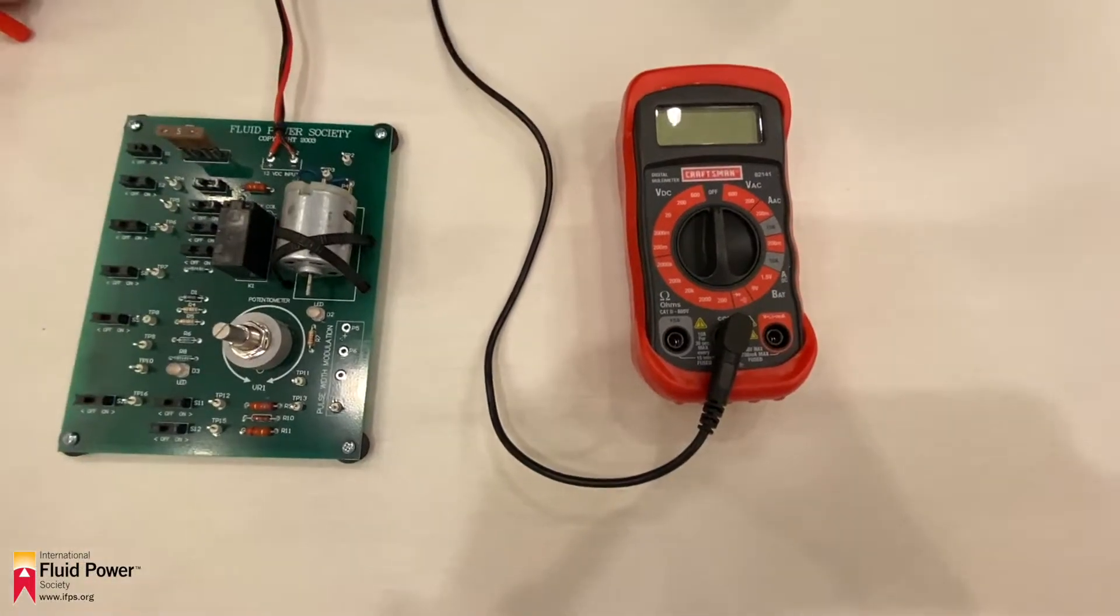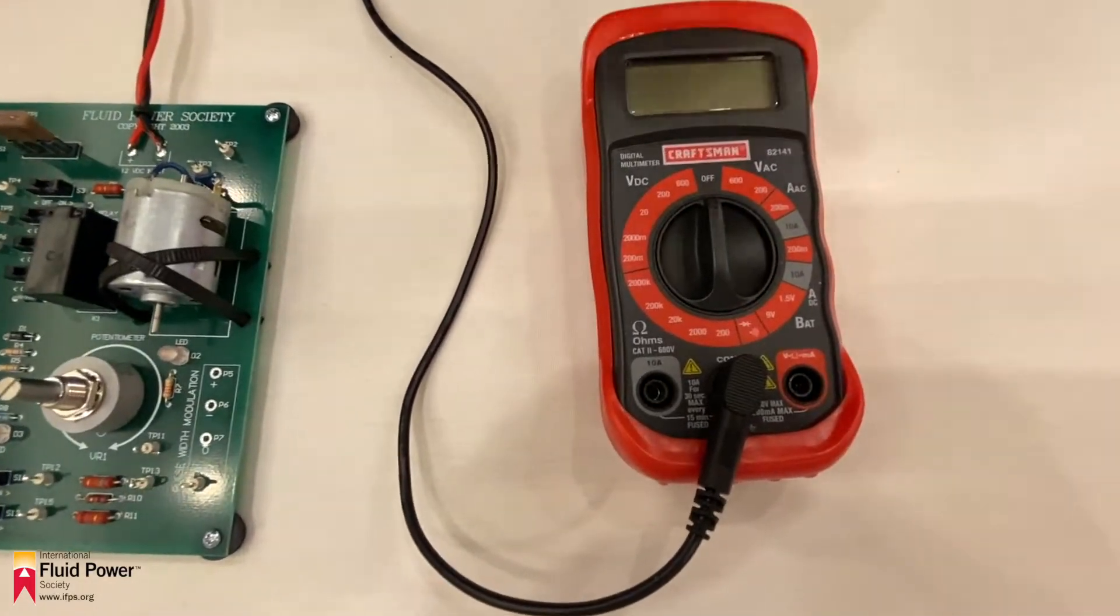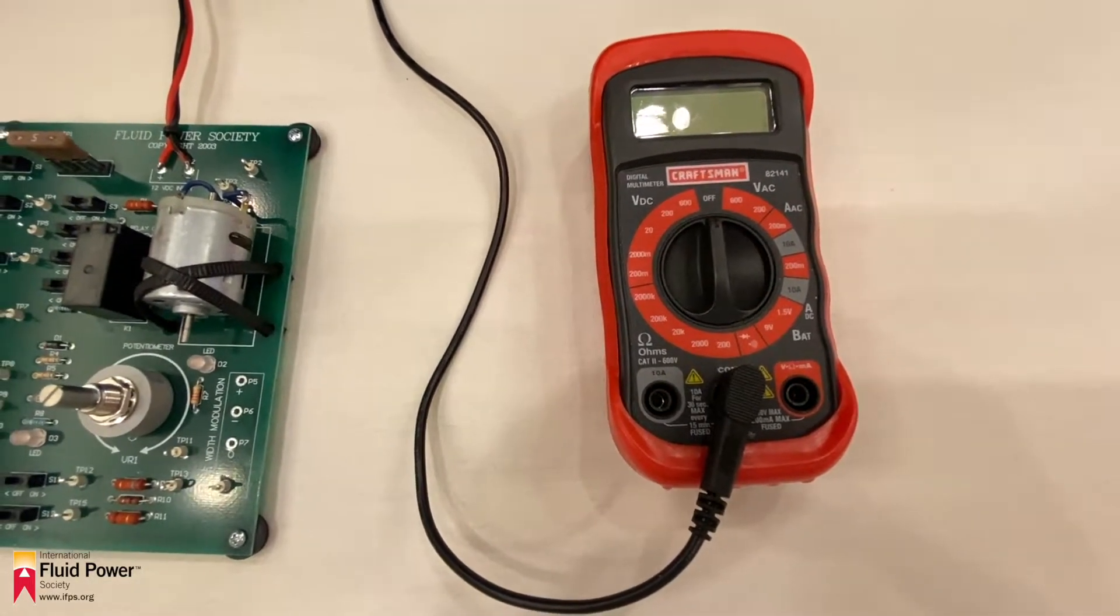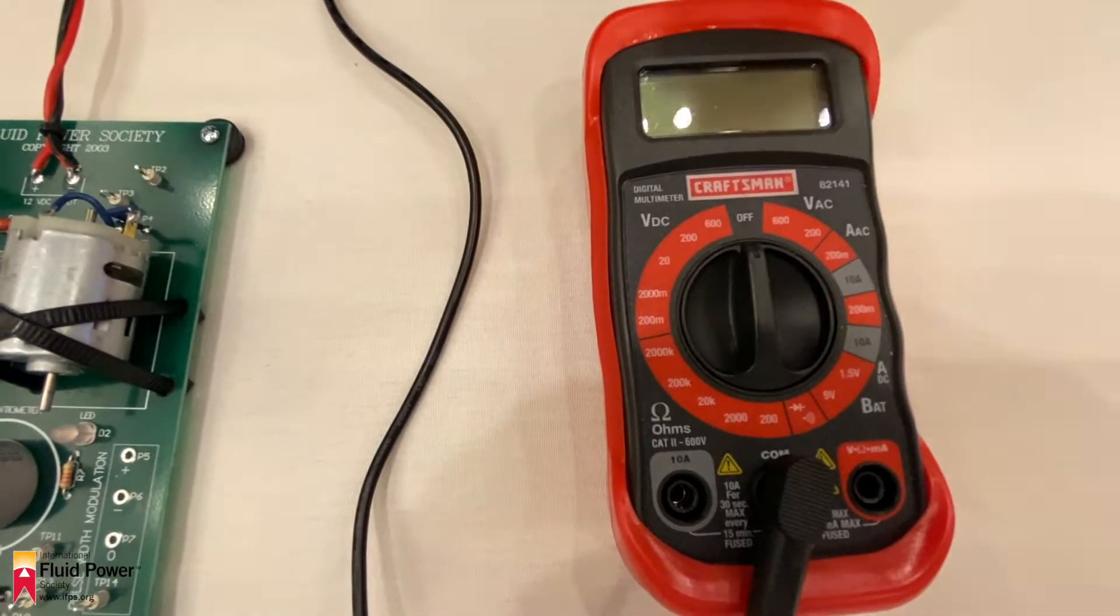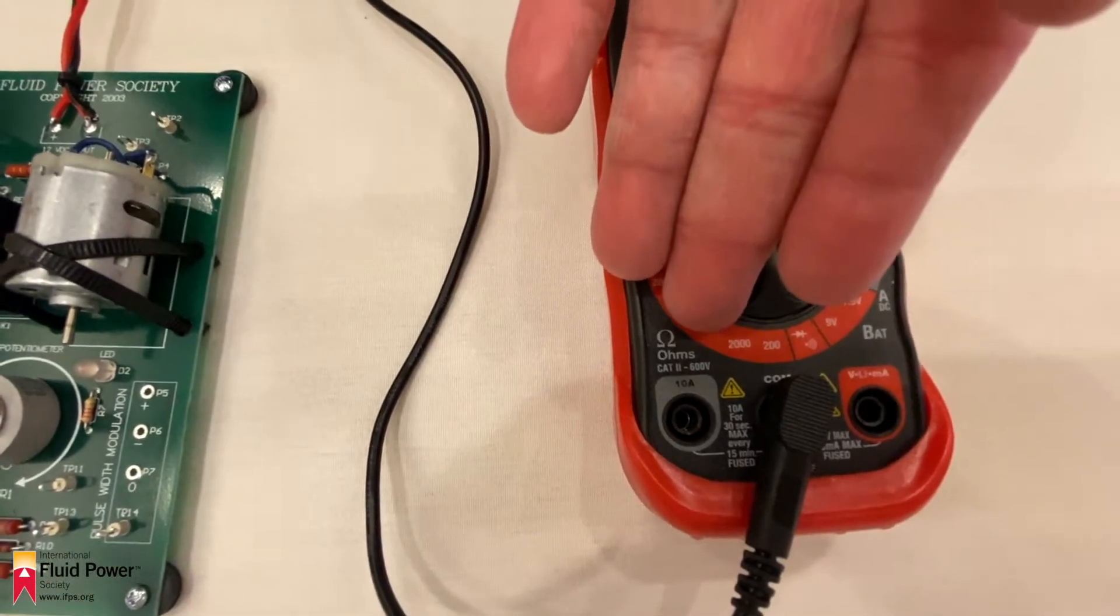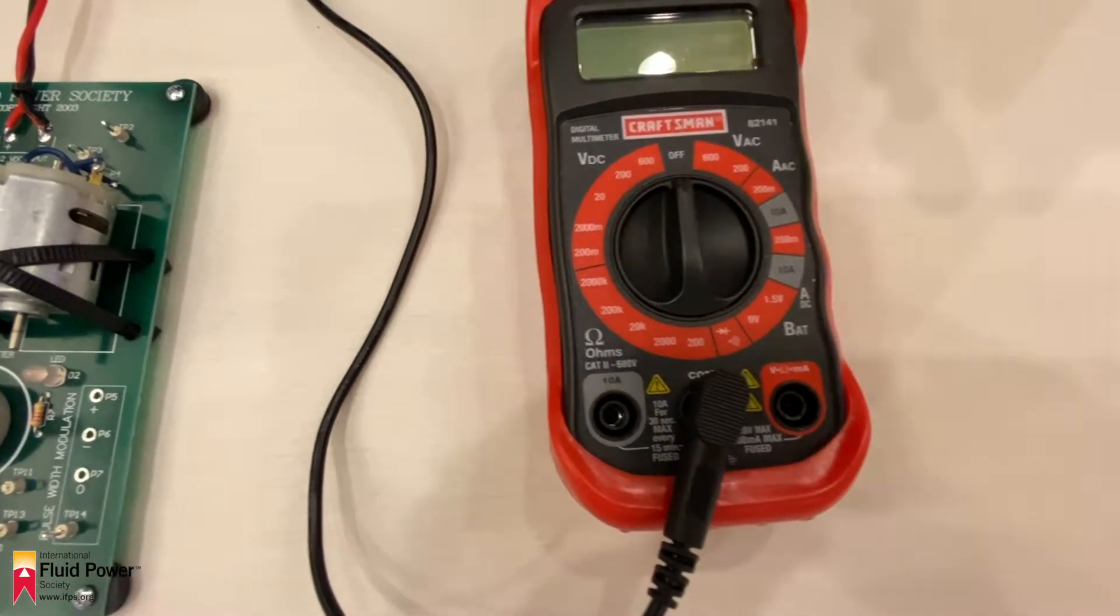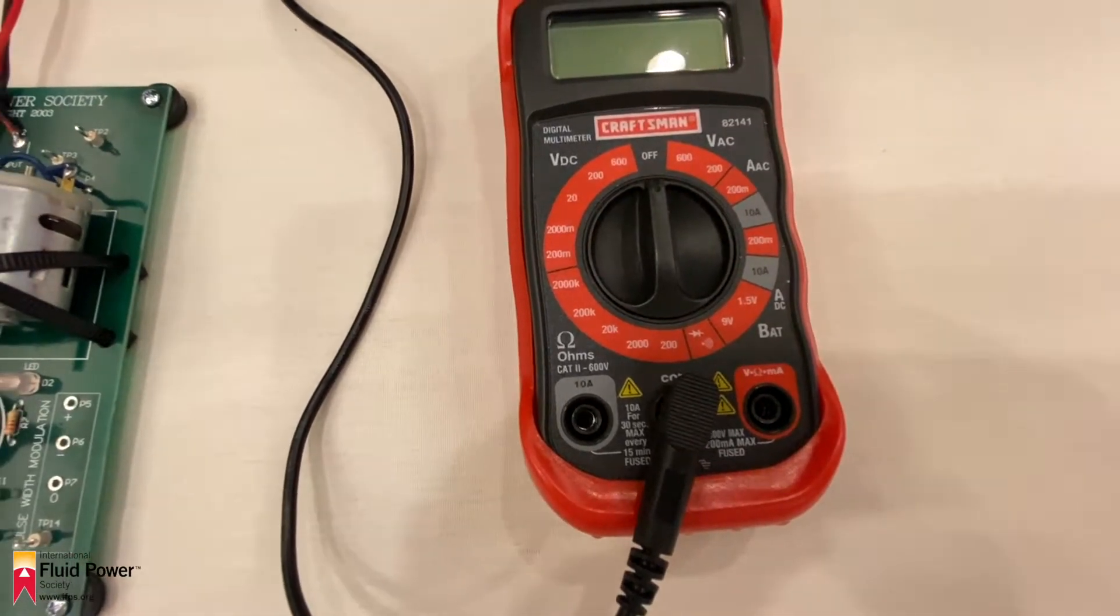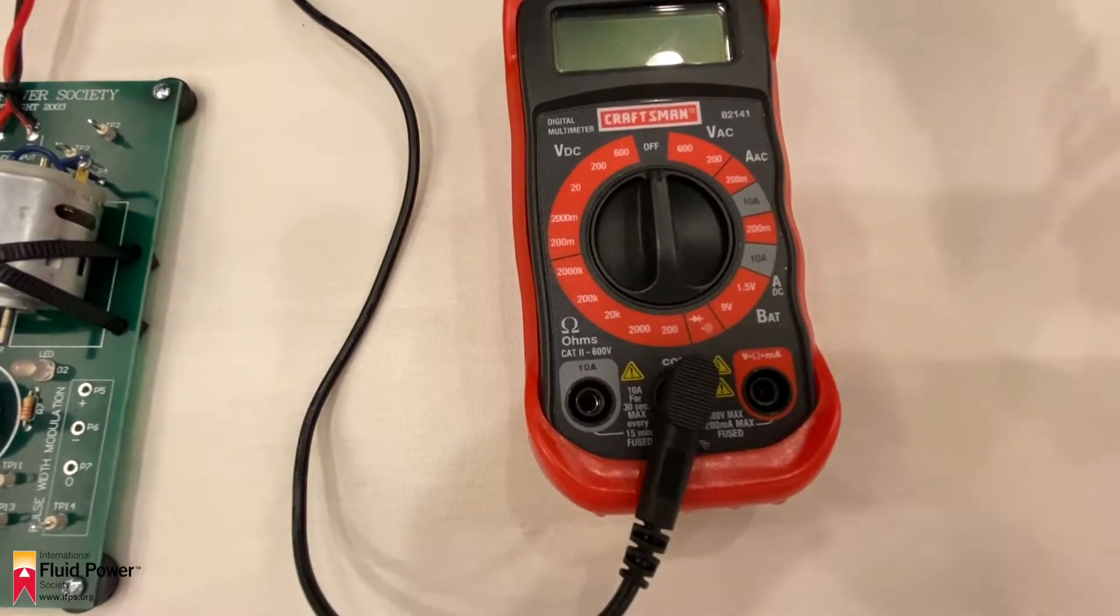The selector dials must also be set to the correct position when using the meter. V is for voltage. The omega or ohms sign is for resistance. A is for amperage, and MA is for milliamps.